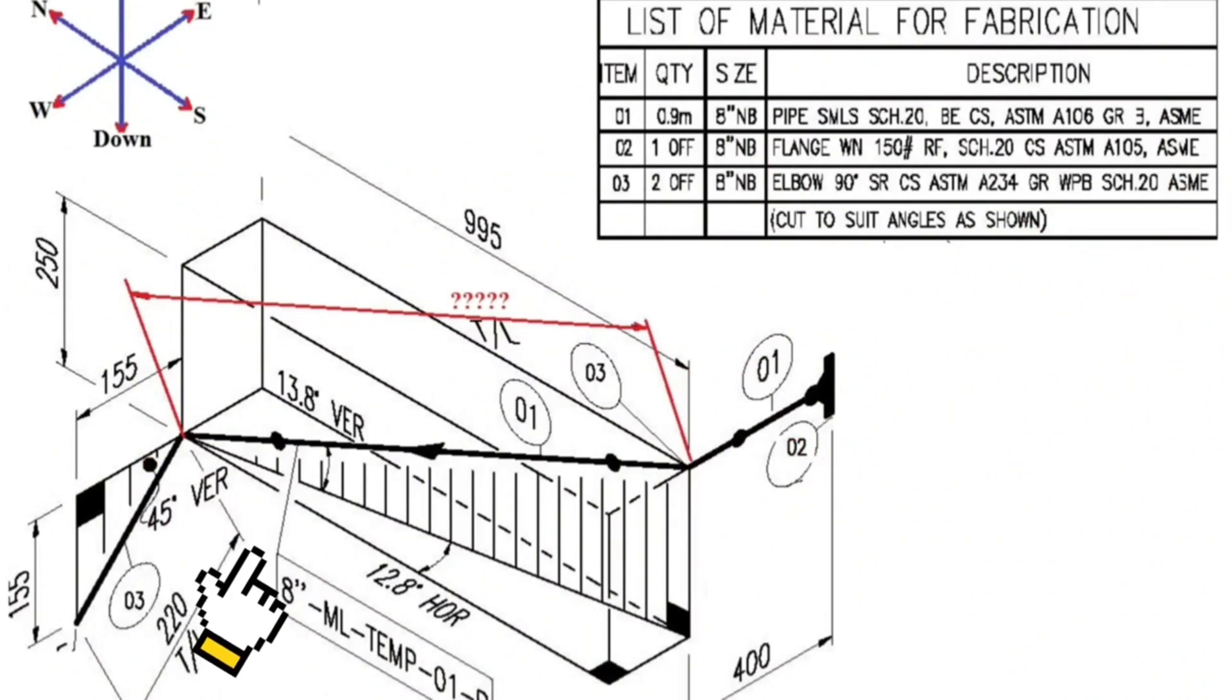This is the pipe isometry. This is the sketch showing the directions. And this is the list of materials for fabrication.